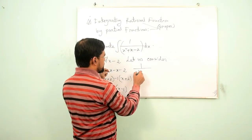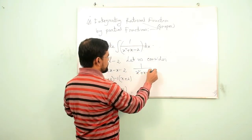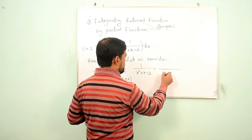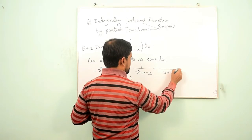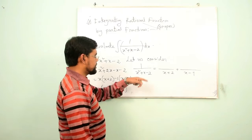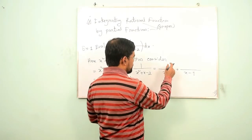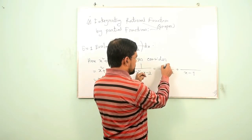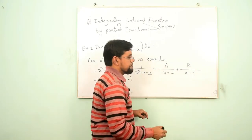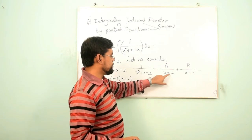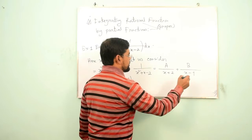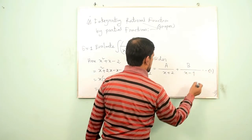The integrand 1/(x² + x − 2) can be written as A/(x + 2) + B/(x − 1), since we have two linear factors. We do not know what the numerators should be, so let them be constants A and B. Let us call this Equation 1.